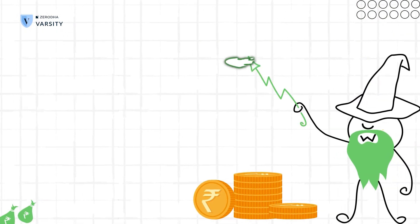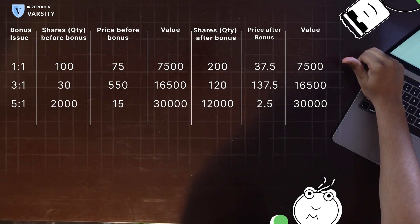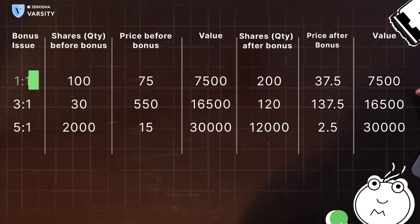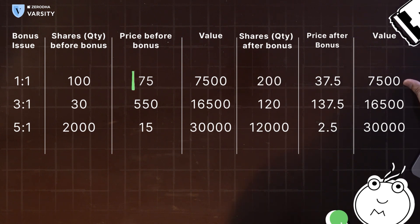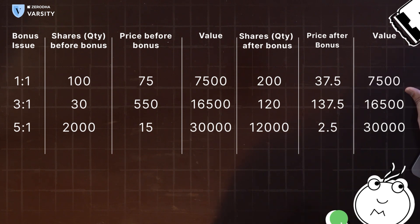The next corporate action is a bonus, which refers to bonus shares. These are free shares that shareholders get out of the reserves of the company and are usually in a fixed allotment like 1:1 or 1:2. For a bonus issue of 1:1, if you had 100 shares, those 100 shares now become 200. The price of the stock, let's say was 75, will now halve and become 37.5. Before the bonus, the value of your shares was 7,500, and after the bonus, the value of your shares is still 7,500.